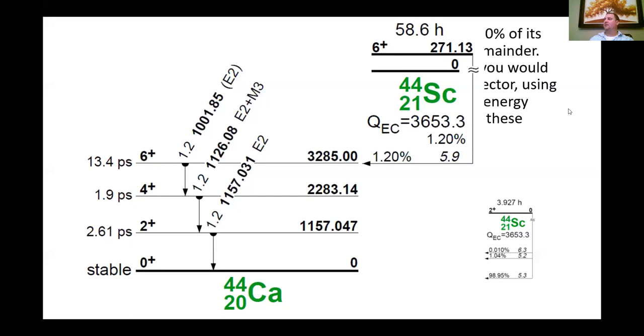The final comment on this level diagram is to make note that because the metastable state only decays through electron capture 1.2% of the time, the other 98.8% of the time, the metastable state of the scandium is going to decay to the ground state of the scandium-44 by emitting a gamma ray that matches the energy difference between those two nuclear levels. So nearly every single decay of the scandium-44 is going to end up emitting a 271.13 keV gamma ray.